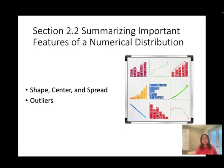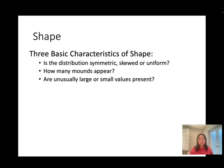Session 2.2: summarizing important features of a numerical distribution. We're going to talk about shape — three basic characteristics. First, what the distribution looks like: symmetric, skewed left, skewed right, or uniform. Second, how many modes are present. Third, unusually large or small values — the outliers. If some data is far away from the majority, we call those outliers.